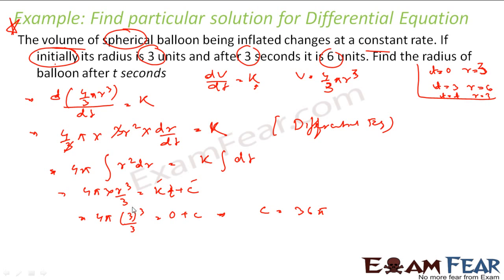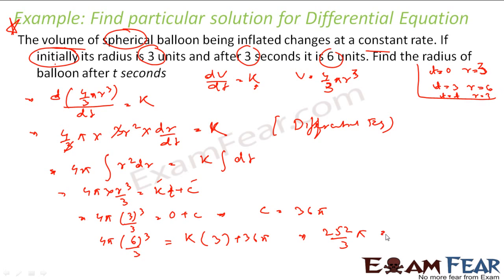Now putting t = 3 and r = 6: 4π · 6³/3 = k·3 + 36π. Solving: 4π · 216/3 = 3k + 36π → 288π = 3k + 36π → 3k = 252π → k = 84π. So k = 84π.